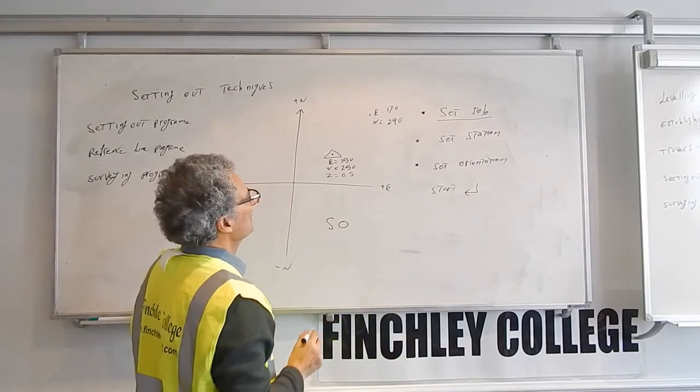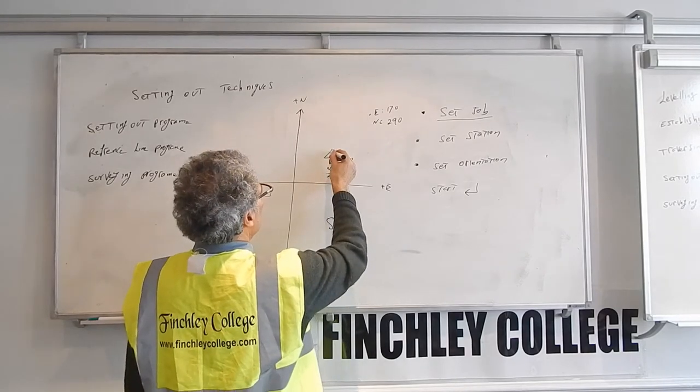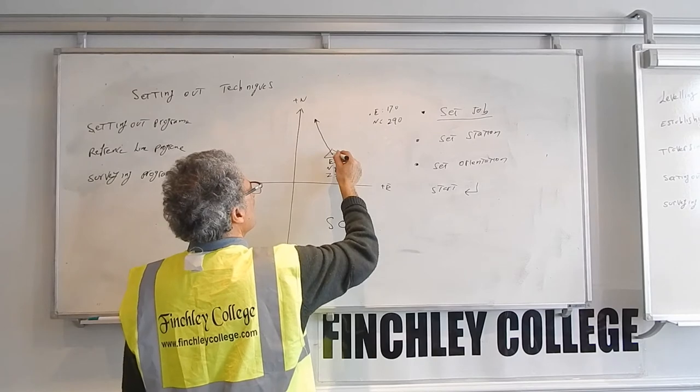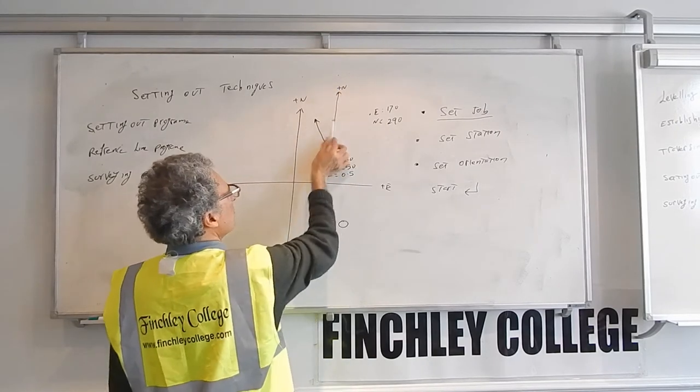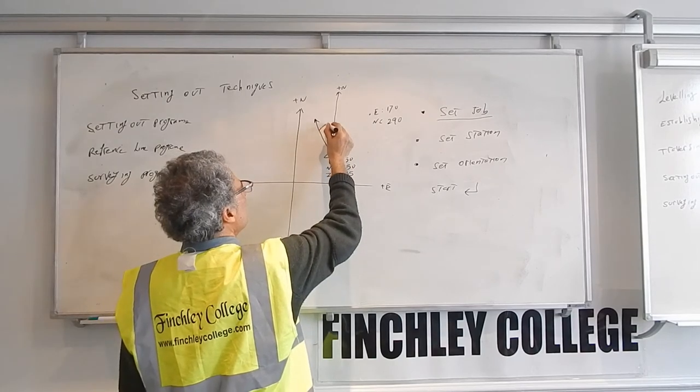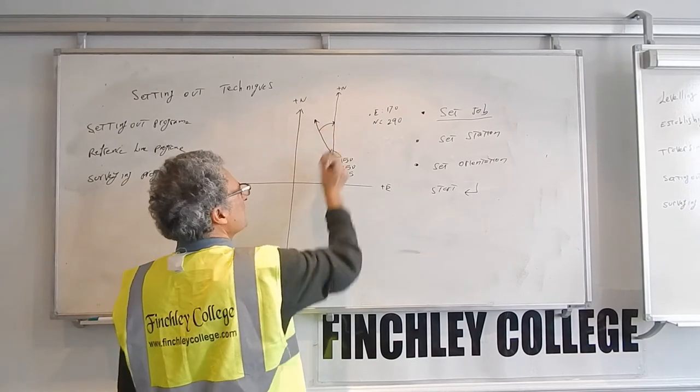So when you go to start, the instrument at the moment may be pointing here, for example, and you want to set up this one. So the North is here, so the instrument draws the North parallel to the actual North. The instrument calculates the difference in angle between what it is now and the North.